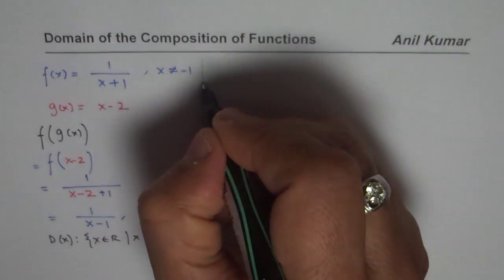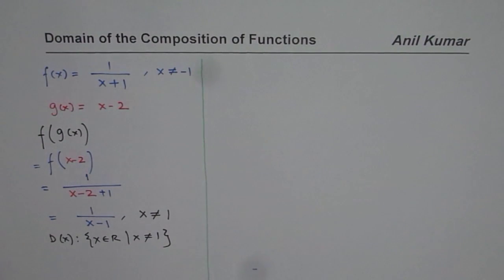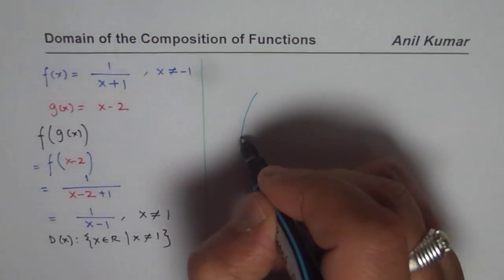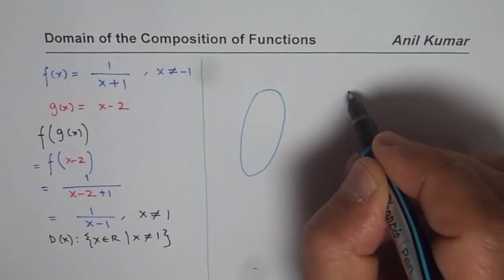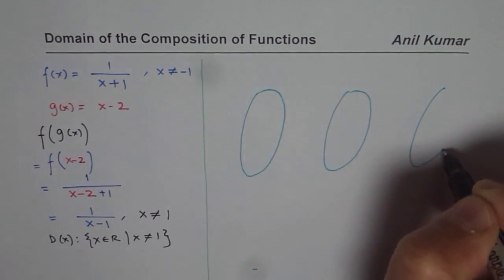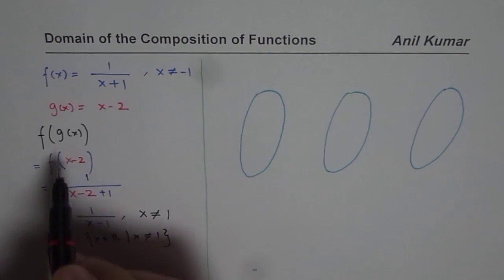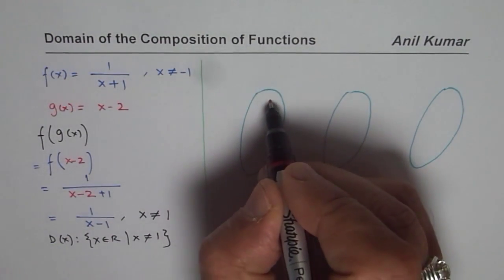This is a very important point to understand. Instead of taking more examples right away, let me elaborate on this concept — why is it so? We will see the composition of functions in a different way, which is essentially the basic definition. We have two functions involved, and for f of g of x, we always start from the inside function first. So first we perform the operation for the g function.